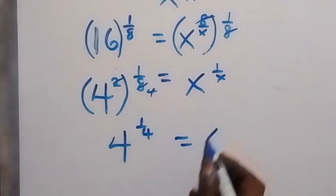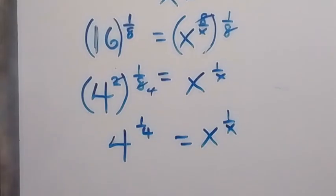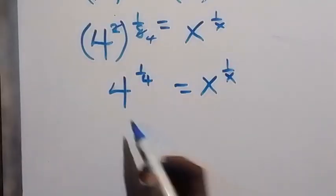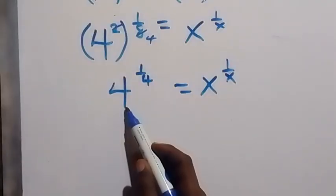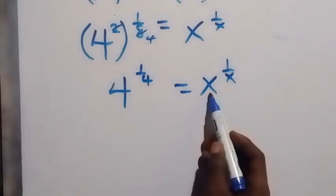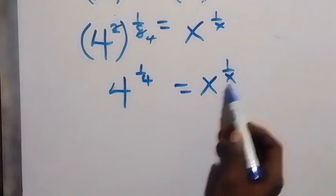which is equal to x raised to the power of 1 over x. And then from here, we have, this here is 4. And the denominator here is 4. Same thing. This here is x. The denominator here is x.